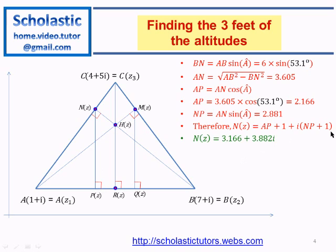So the coordinates of N, z_N equals 3.166 + 3.882i. The similar coordinate of M, z_M can be found using this triangle and simplification. So it's 4.837 plus 3.882i, and the third foot R equals 4+i.